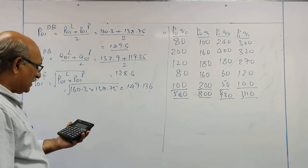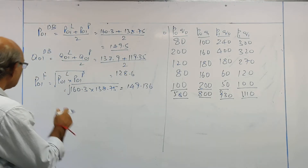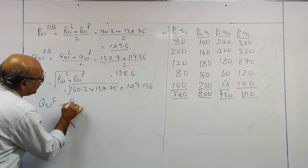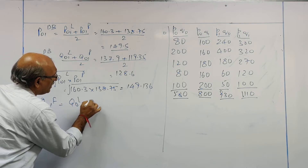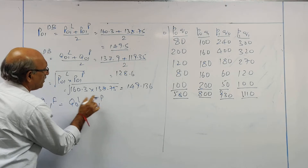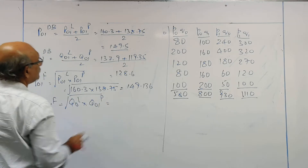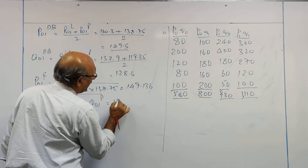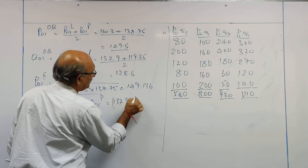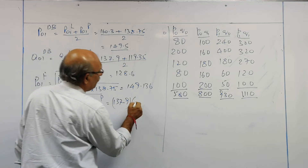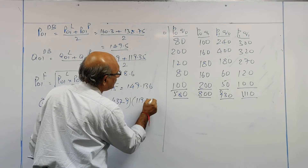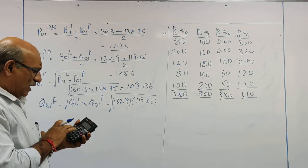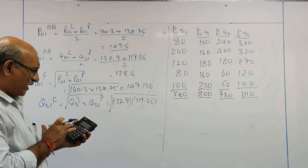This is 149.136. Next, quantity index number of Fisher: this is quantity index number of Laspeyres into quantity index number of Paasche's, under root. So this is equal to 137.9 into 119.35, under root.